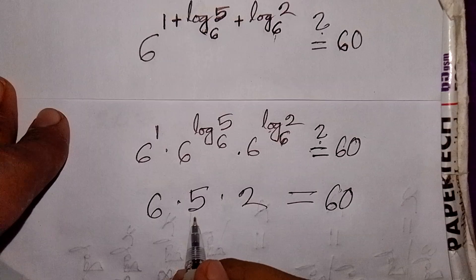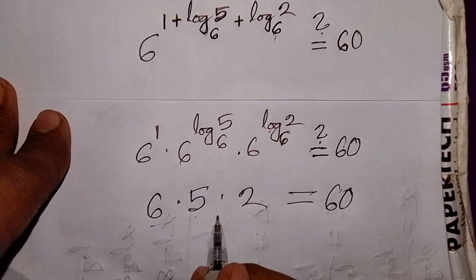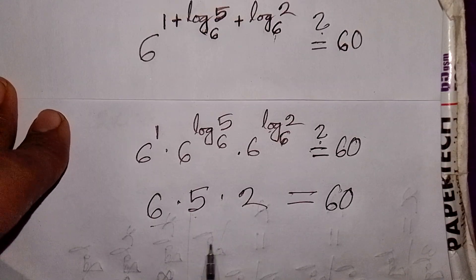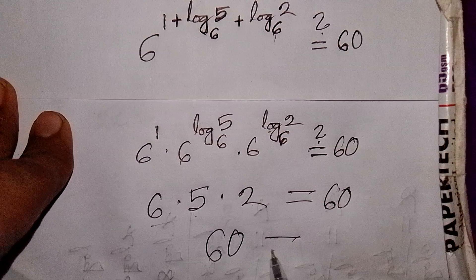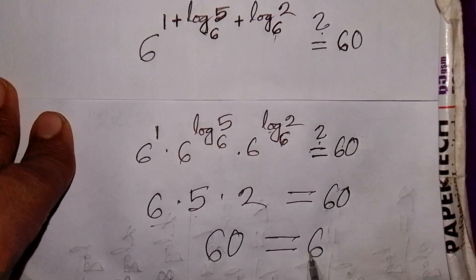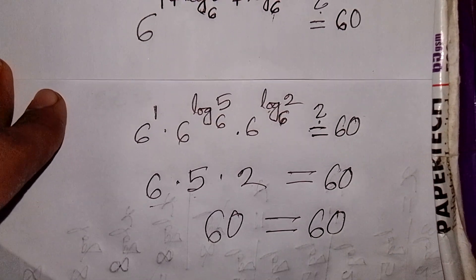6 times 5 is 30, and 30 times 2 is 60. So 60 is equal to 60 — the left side equals the right side, and the value of x has been verified.